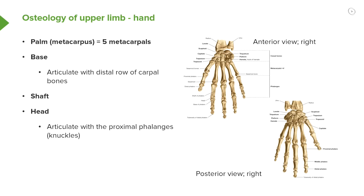If we look at the palm of the hand, this is known as the metacarpus. It's formed by five metacarpals. These metacarpals all have similar features — they have a base, and the base of the metacarpals articulates with the distal row of the carpal bones: the trapezium, trapezoid, capitate, and hamate. The proximal row of carpal bones articulates with the radius at the wrist joint. Each metacarpal has a shaft and a head. The head of the metacarpals forms the knuckles, and these articulate with the proximal phalanges of the digits. So each individual metacarpal has a base, a shaft, and a head, with the head articulating with the proximal phalanges.